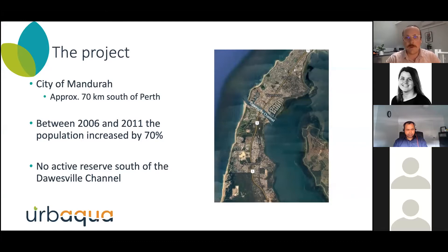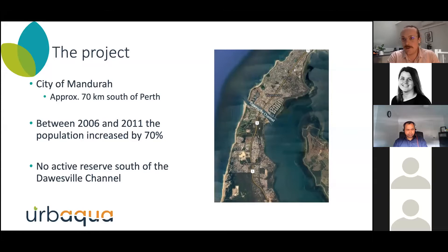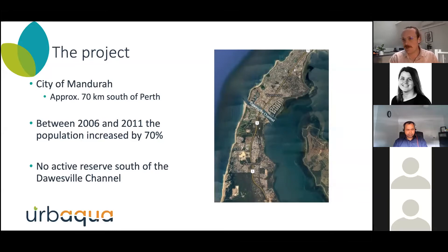The project is located in the city of Mandurah, which for people who aren't West Australian based is about 70km south of Perth. The area is south of the Doorsville channel. After the early 2000s, the city of Mandurah noticed that the population was increasing quite significantly — particularly in the back half of the noughties, it increased by 70%. They identified that there weren't any active reserves or public open space that could be used for sporting facilities or active recreation.